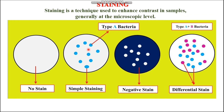Based on the process of staining and types of stains used, it is of three types: simple staining, negative staining, and differential staining. We will discuss each type of staining process in this video in detail, along with the fixation process.